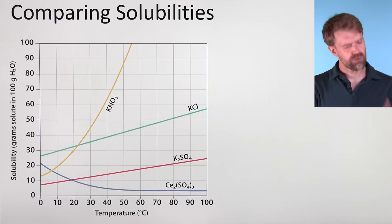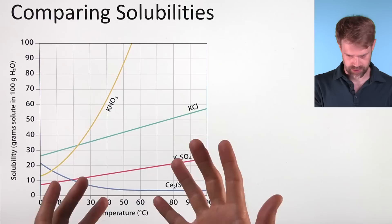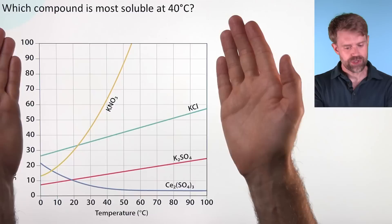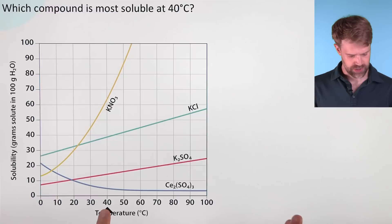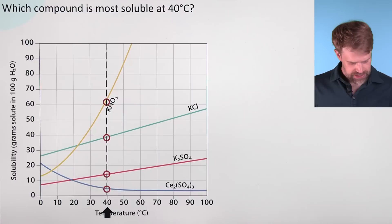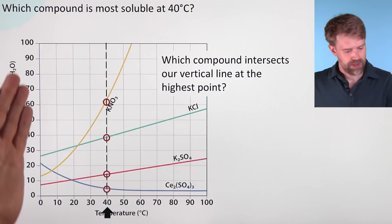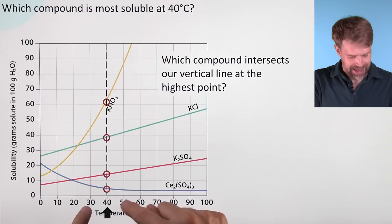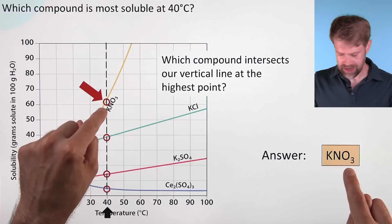Graphs like this are really useful for comparing solubilities between different solutes. Here we'll bring back some curves for the other solutes and ask: which compound is most soluble at 40 degrees Celsius? We find 40 degrees on the x-axis, draw a vertical line, and see that it intersects each one of our curves at one point. To find the most soluble compound, we just need to find which compound intersects this line at the highest point. Clearly, that is KNO3 (potassium nitrate) — that is the most soluble at 40 degrees.